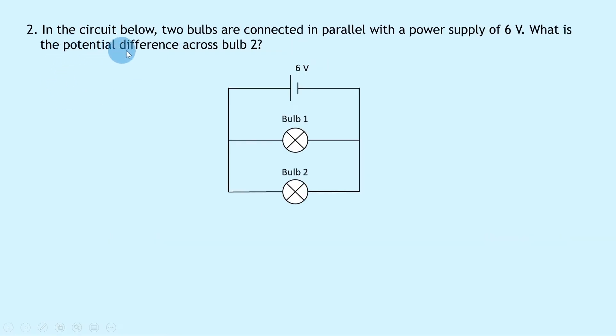Question 2 says that in the circuit below, two bulbs are connected in parallel with a power supply of 6 volts. What is the potential difference across bulb two? So we've got our 6 volt battery here in parallel with bulb one which is also in parallel with bulb two.